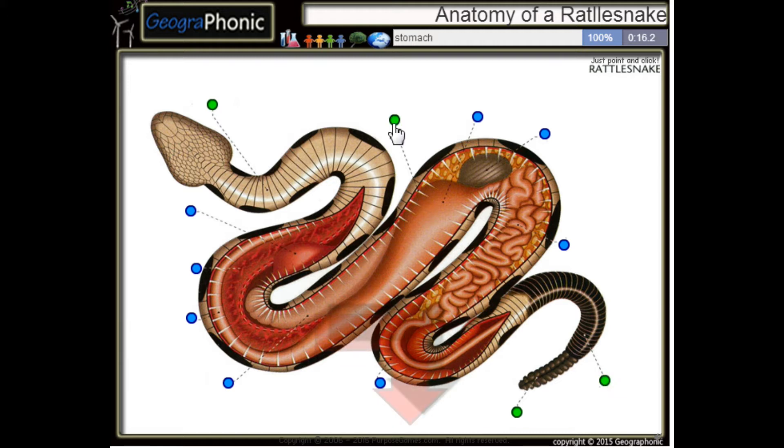This is a rib, a single rib. This is the stomach of the rattlesnake. This is its liver. Here we see the heart.